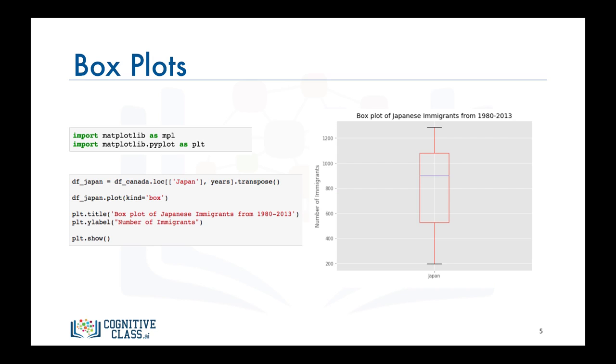And there you have it, a box plot that provides a pleasing distribution of Japanese immigration to Canada from 1980 to 2013.